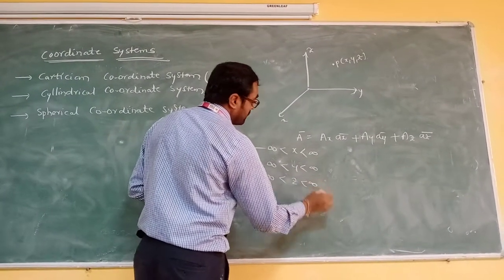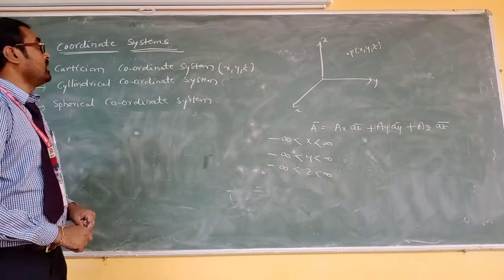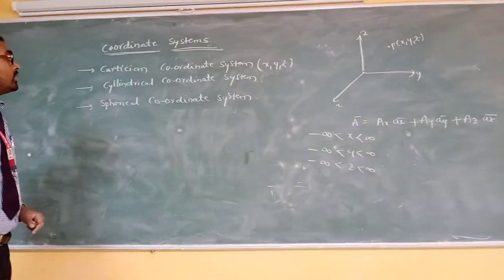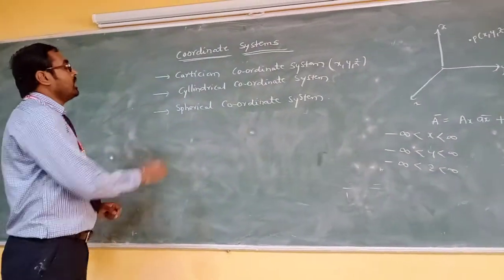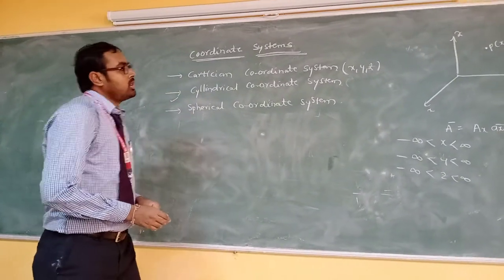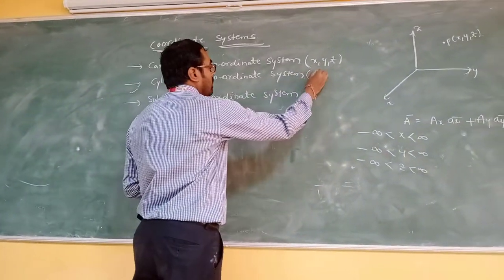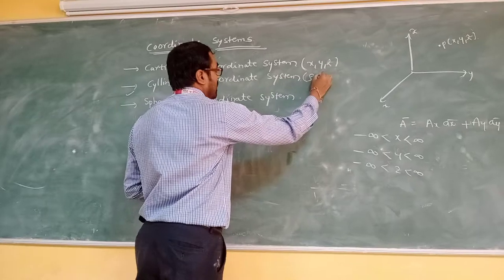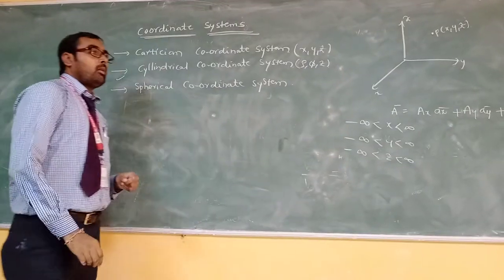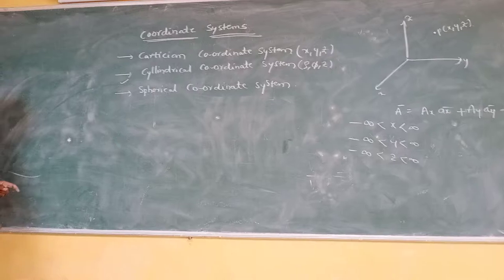The limits of these Cartesian coordinates are from minus infinity to plus infinity. The next coordinate system is the cylindrical coordinate system. The cylindrical coordinate system coordinates are rho, phi, and z.